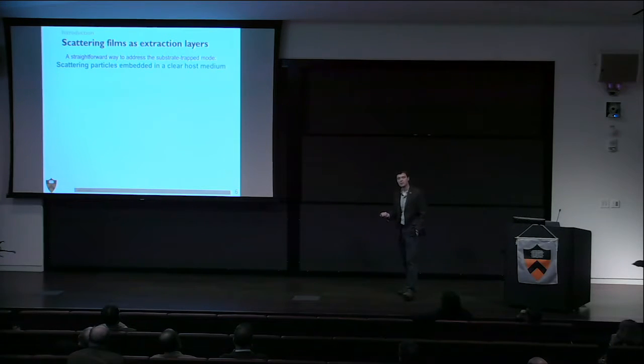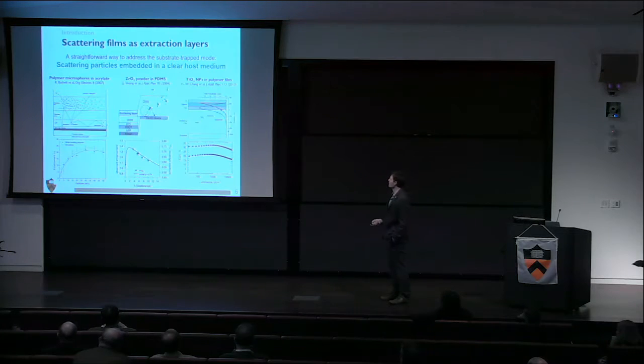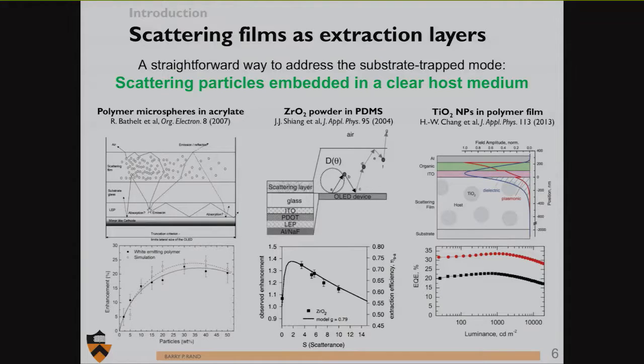So a big problem is getting this light out. You can see here's a pixel of a green LED, with all the light emanating out the side of the structure. The work we're doing is being led by Kyung Min Lee, who has a poster this afternoon. I recommend you go see it. What we've done is take an approach that's been used before, trying to scatter light out of the substrate.